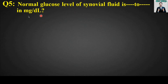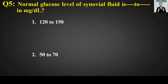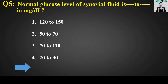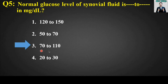MCQ number five: Normal glucose level of synovial fluid is blank to blank in milligram per dl. Options are: 120 to 150, 50 to 70, 70 to 110, or 20 to 30. The right answer for this MCQ is option number three — normal glucose level of synovial fluid is 70 to 110 mg/dl.